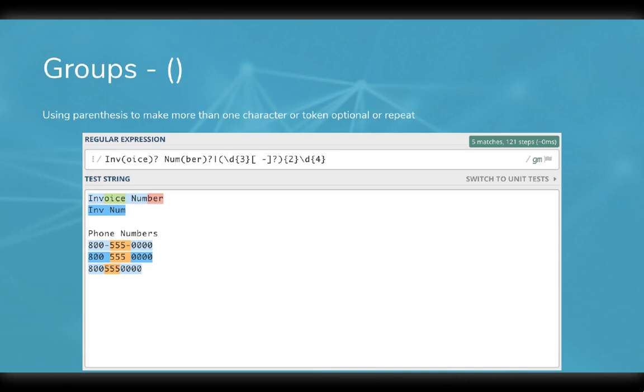A couple examples of when this can come in handy are below. First, we have two invoice number labels, one written out fully and the other abbreviated. In the regular expression, we make the latter half of the words optional by putting a question mark after the parentheses.